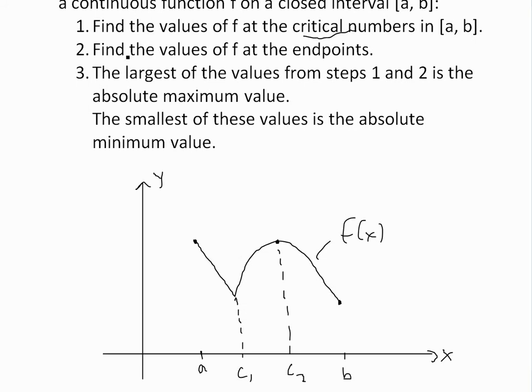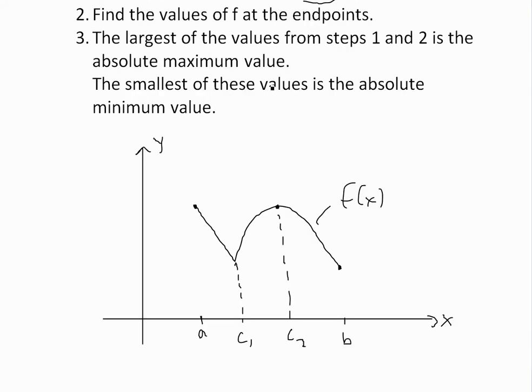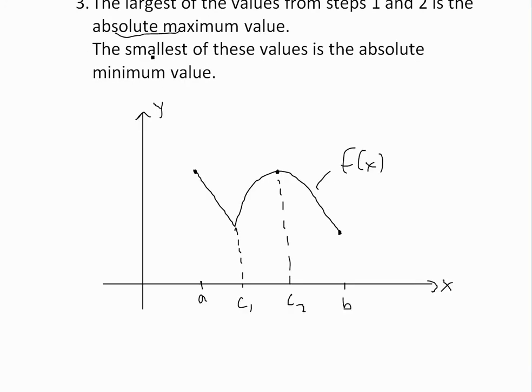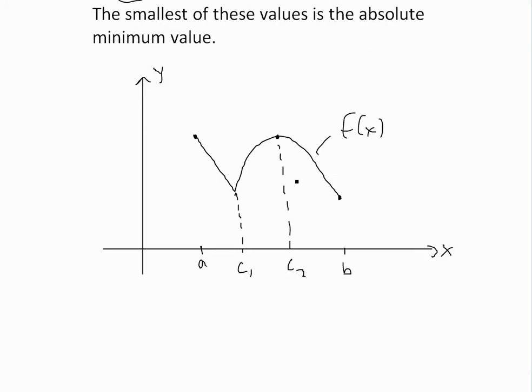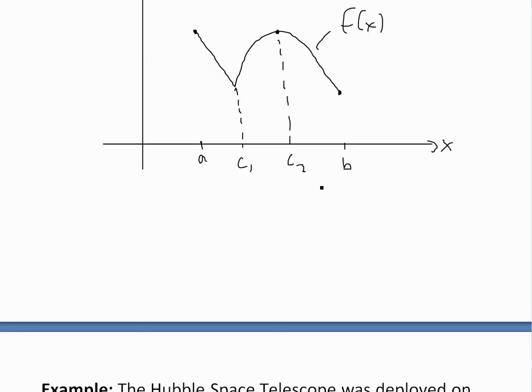is compare the values from steps one and two to see which is the largest—that's the absolute maximum. The smallest of these is the absolute minimum. So basically, the absolute max or min has to be at one of these points, either at the critical numbers or endpoints.